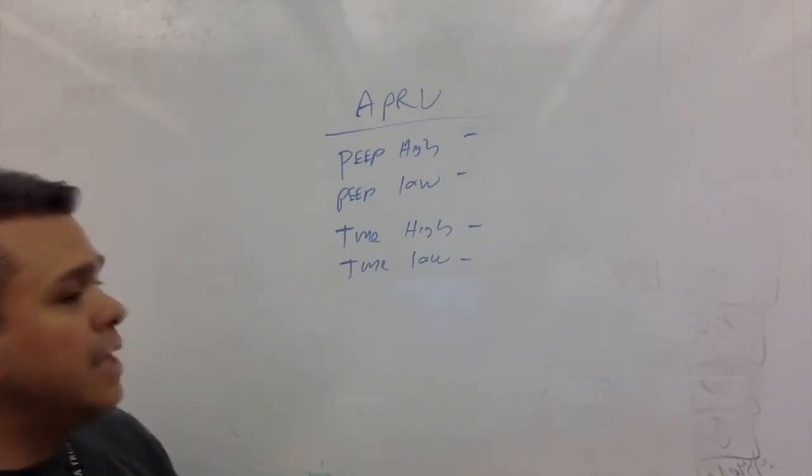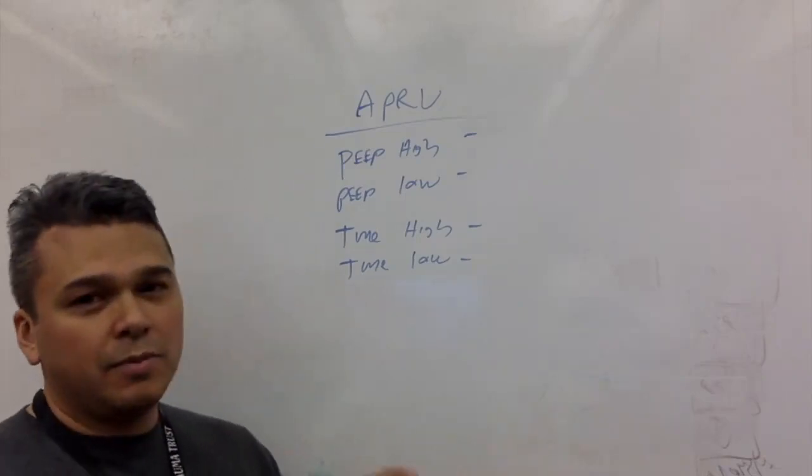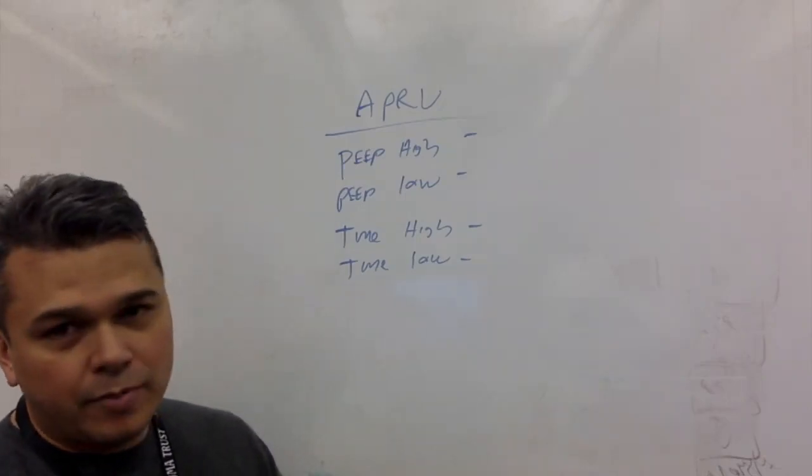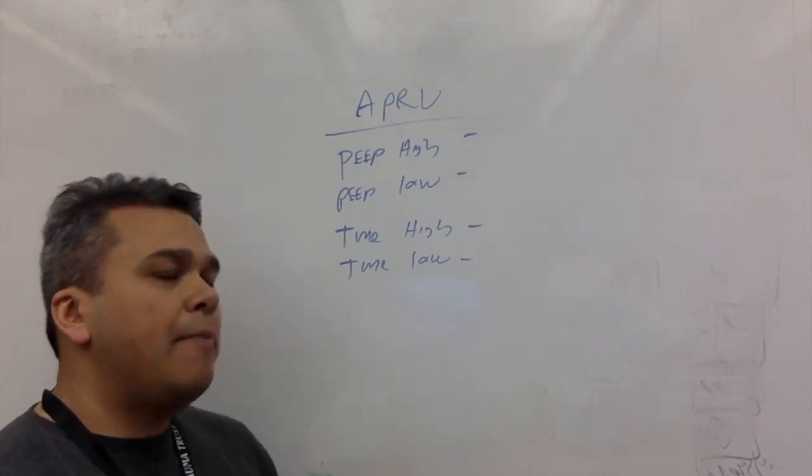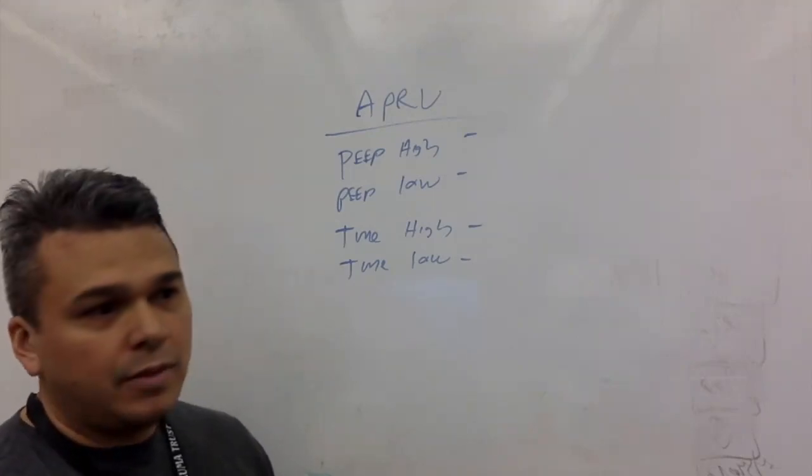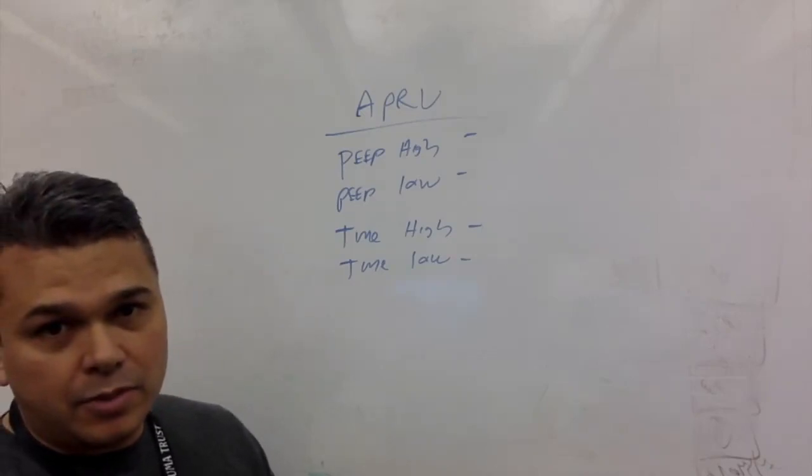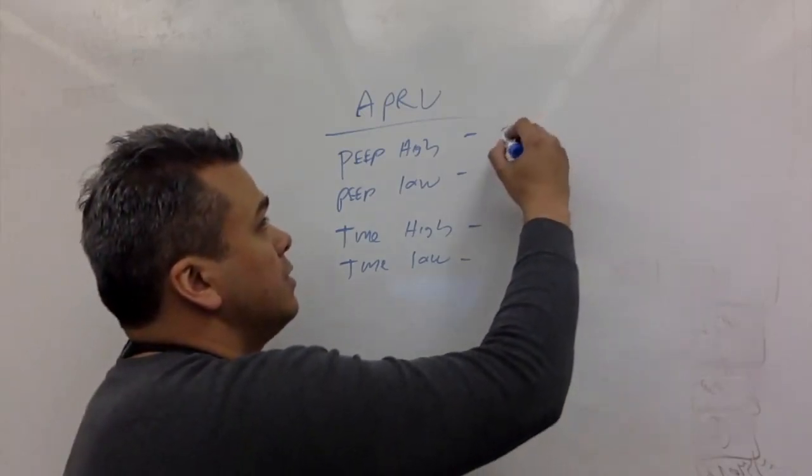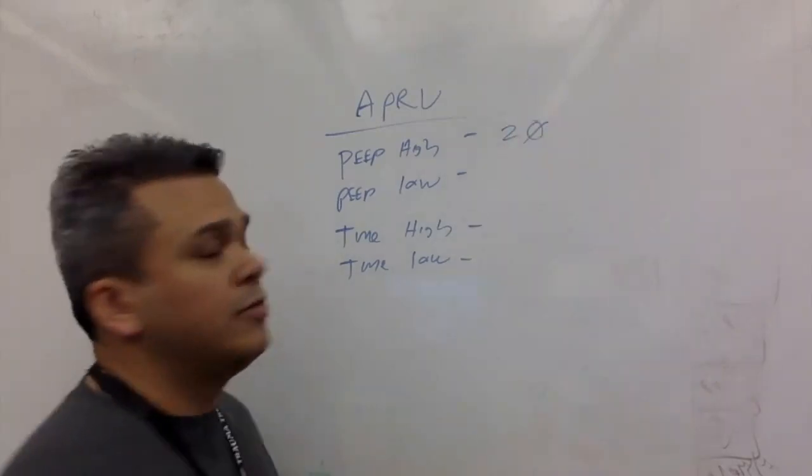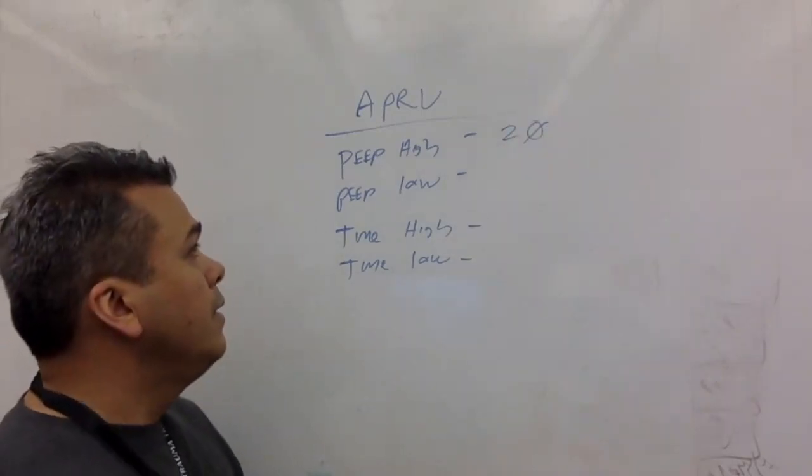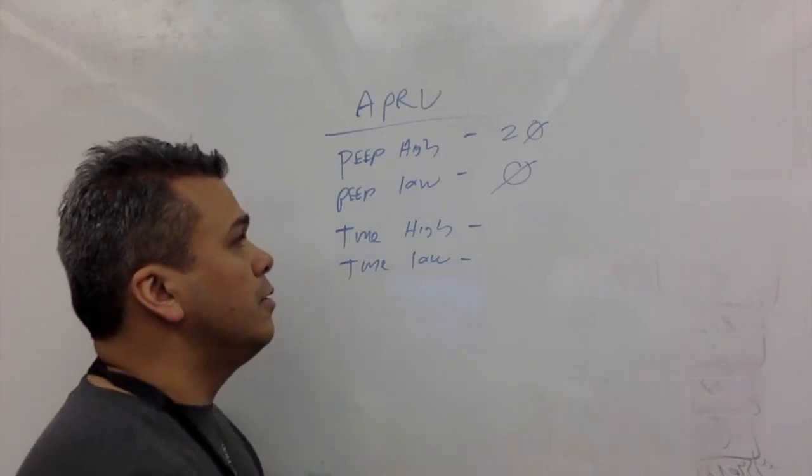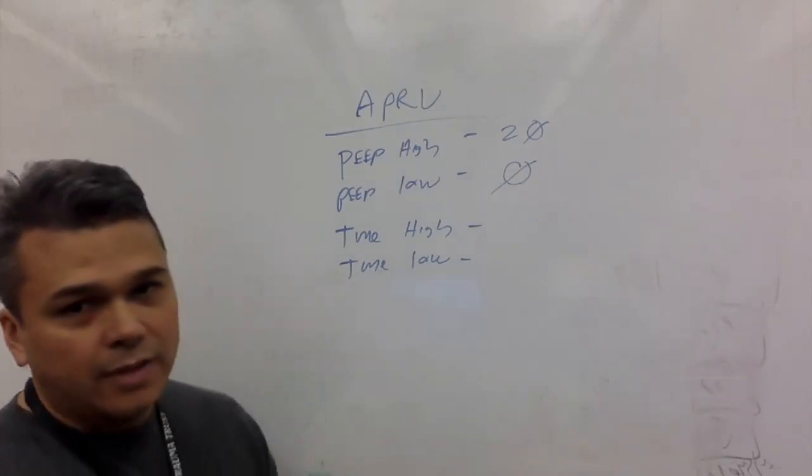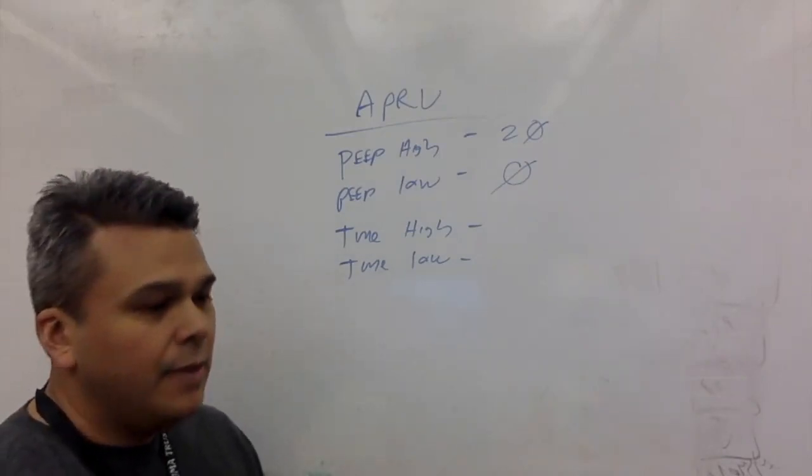You'll notice there's no respiratory rate set because we're talking about time constants now. We're setting the time constant, having this patient breathe a certain duration and we're going to manipulate that from there. PEEP high is usually set by taking the plateau pressure from an assist control patient and going from there. We usually cap it around 30, sicker patients maybe 35, but usually in the 20s is where we'll start a patient. Let's say we're going to start this patient at 20 PEEP high.